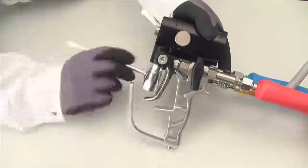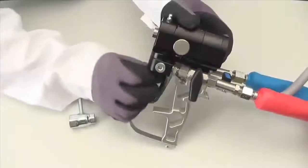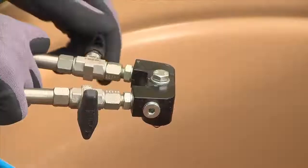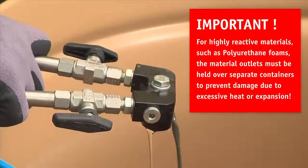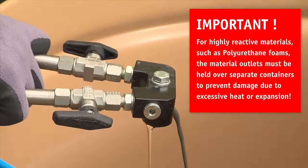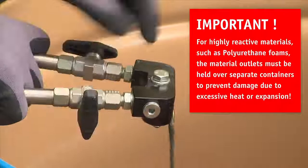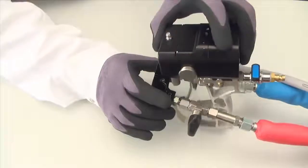In a system without circulation, dismount the inbound manifold from the spray gun, open the outlets and hold the manifold over an empty container. Once clean, bubble-free material exits the manifold, close the manifold outlets and remount the manifold on the spray gun.